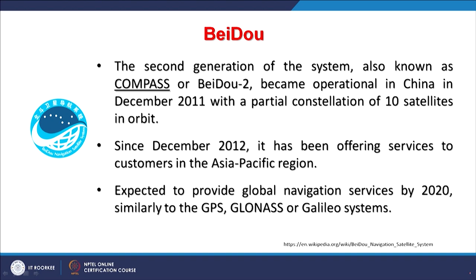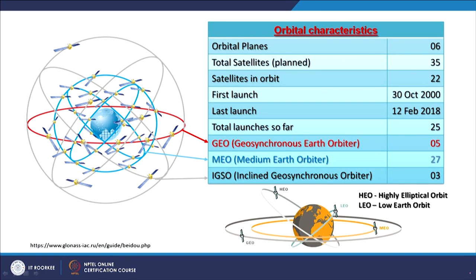The main purpose is to provide global navigation services by 2020, when the full constellation will be in place. For some parts — particularly China and the Asia-Pacific region — the signals may give better accuracy compared to GPS and GLONASS because it exploits geostationary satellites. Galileo, by contrast, is a regional system and its signals are not received in India.